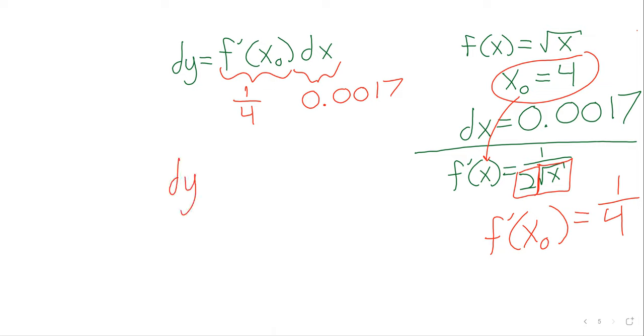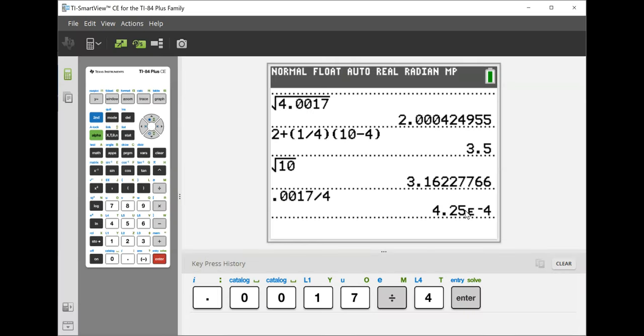So as for dy, all that's left is to take 0.0017 and divide it by 4. And we get 0.000425. Remember what this scientific notation means. It says to take this period and move it to the left four times. And that will give 0.000425.